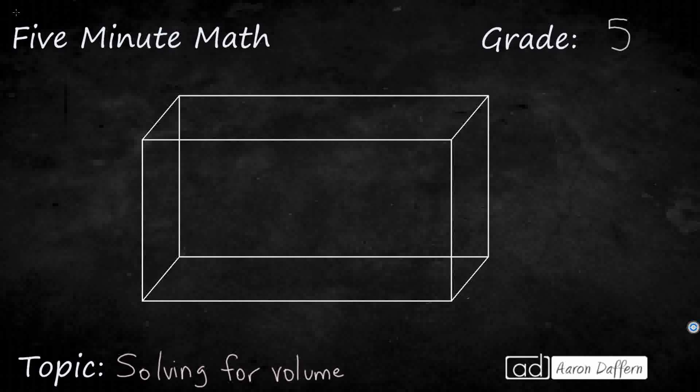So we have just a basic rectangular prism here, and sometimes, rather than giving us the dimensions, we might see something like this. We might be given the volume, and so let's just pick something, let's just make it nice and even, 100 cubic centimeters.